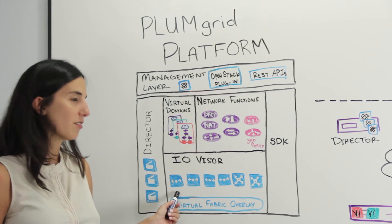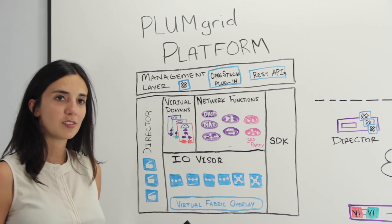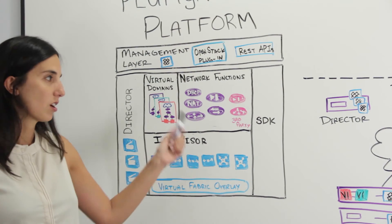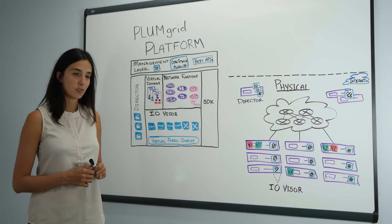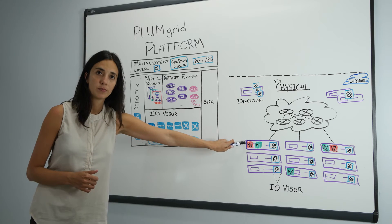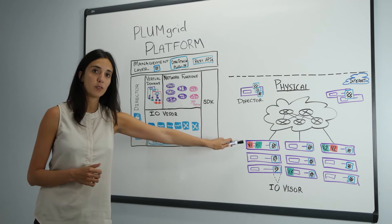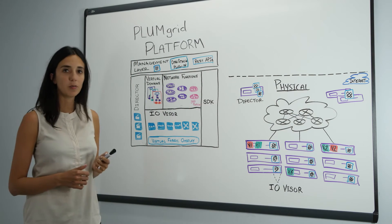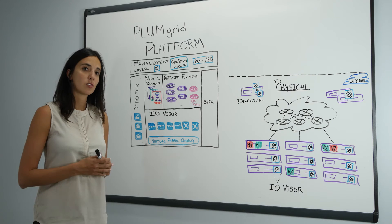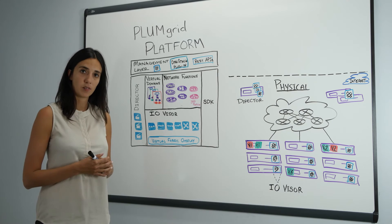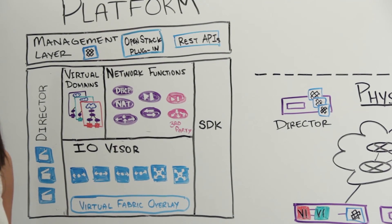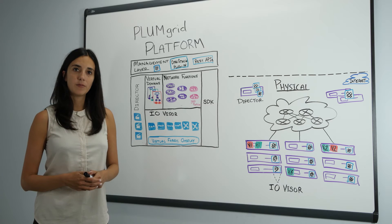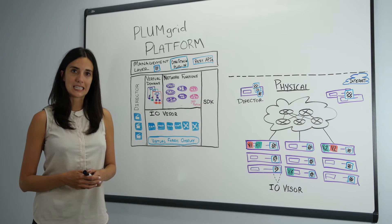The second component is the IOvisor. The IOvisor is the programmable data plane that we use to implement all the advanced functions of the PlumGrid platform. It is deployed as a software module that gets inserted either within the compute node as an edge to provide connectivity for virtual machines, or as a dedicated server or switch to provide gateway functionality, giving connectivity to external resources or legacy network components. The IOvisor achieves the highest level of performance because of its distributed architecture, and it can also be fully upgraded and extended at runtime.